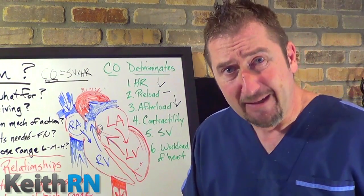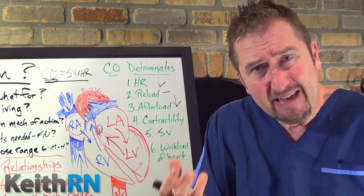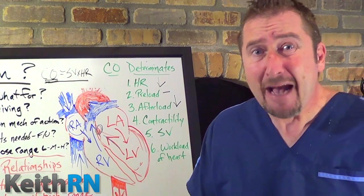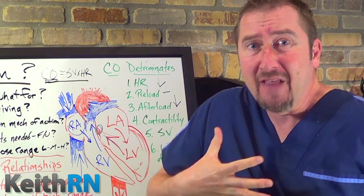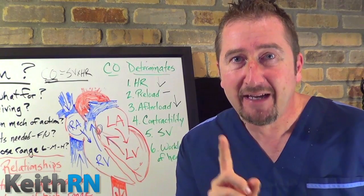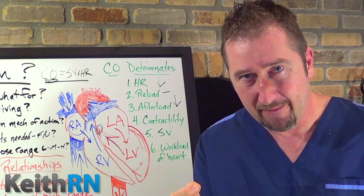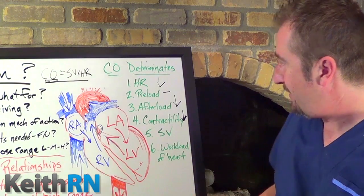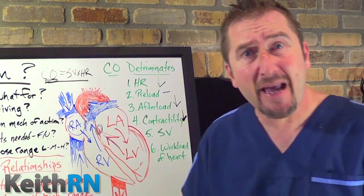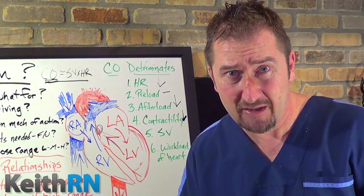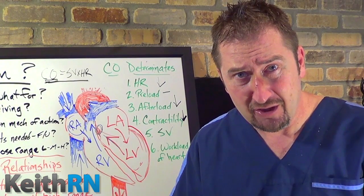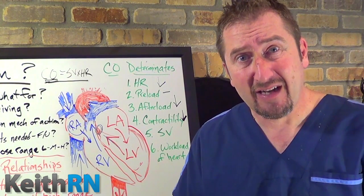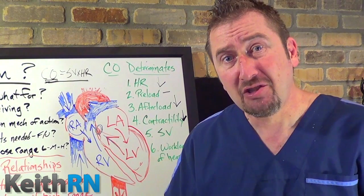Now let's look at contractility — the innate contractibility of the heart fibers themselves. Does a beta blocker affect that? Absolutely. If you get scared, you feel those palpitations — that's because sympathetic stimulation is increasing contractility. So if we're on a beta blocker, we're going to see contractility decreased. Could this be a problem for certain patients? Think about heart failure patients who already have a weakened heart: beta blockers will decrease contractility, but they will benefit those patients in other ways.